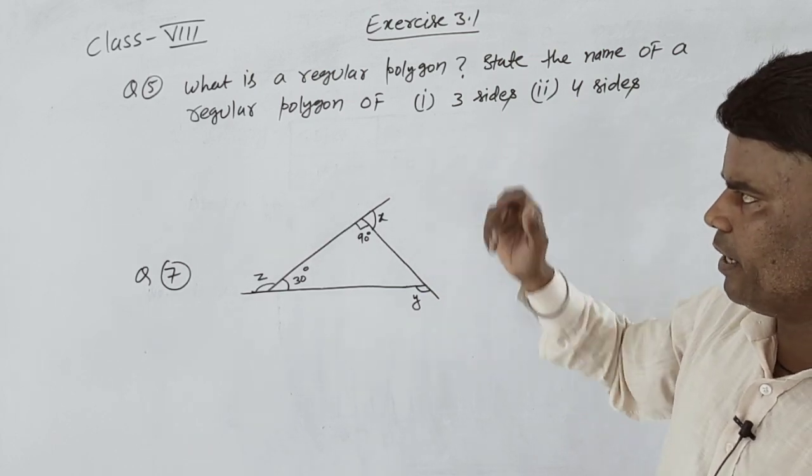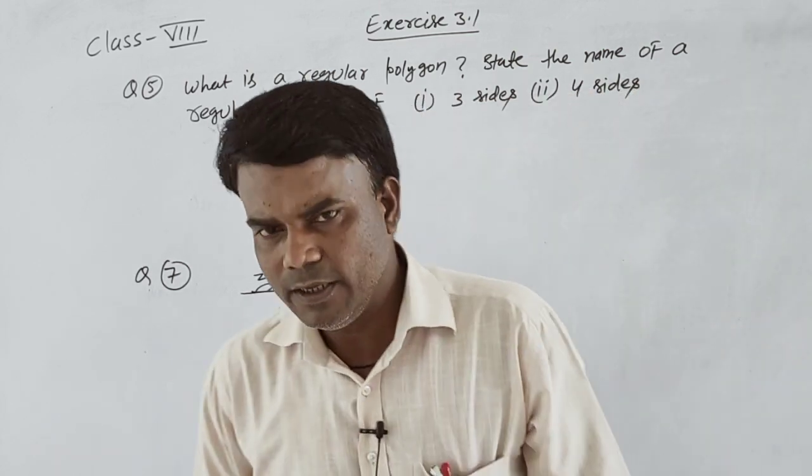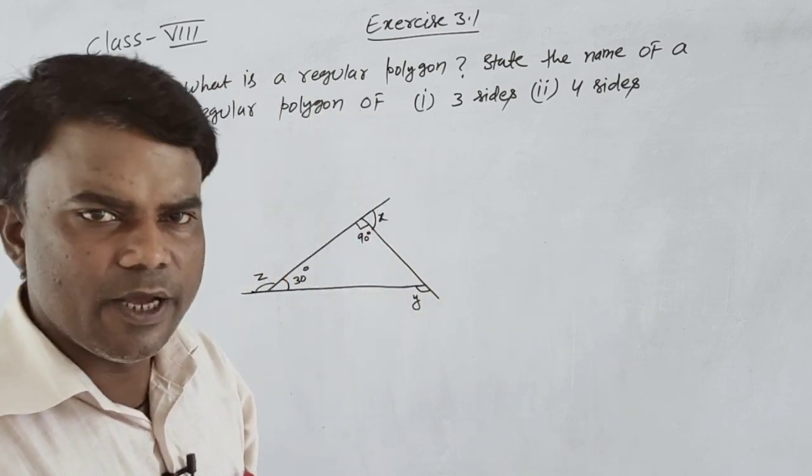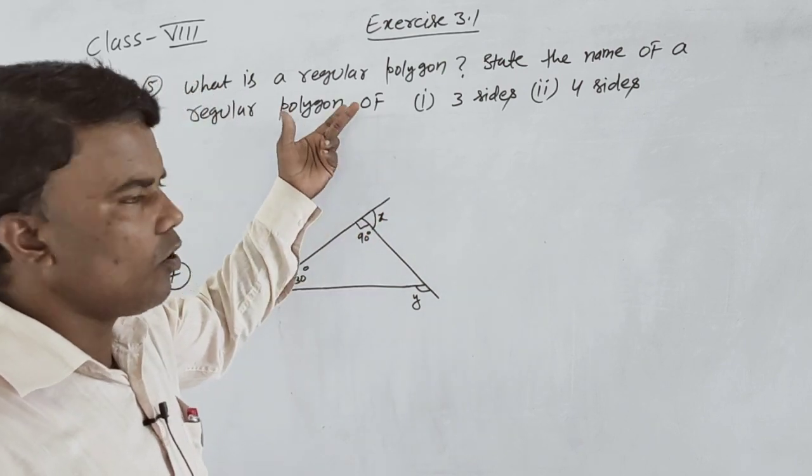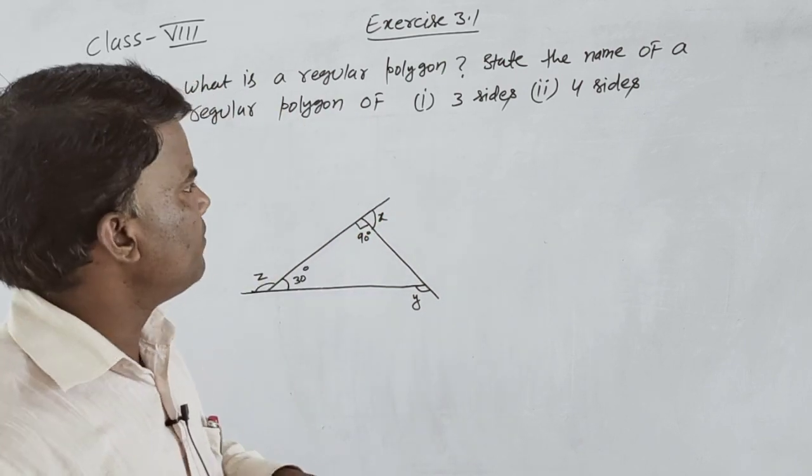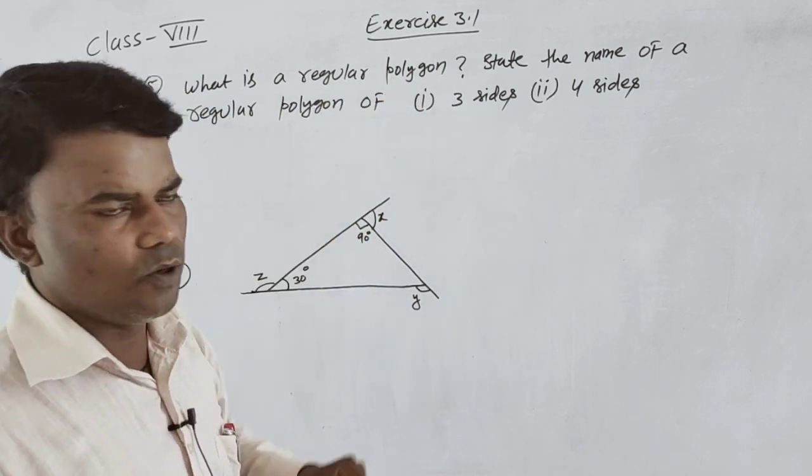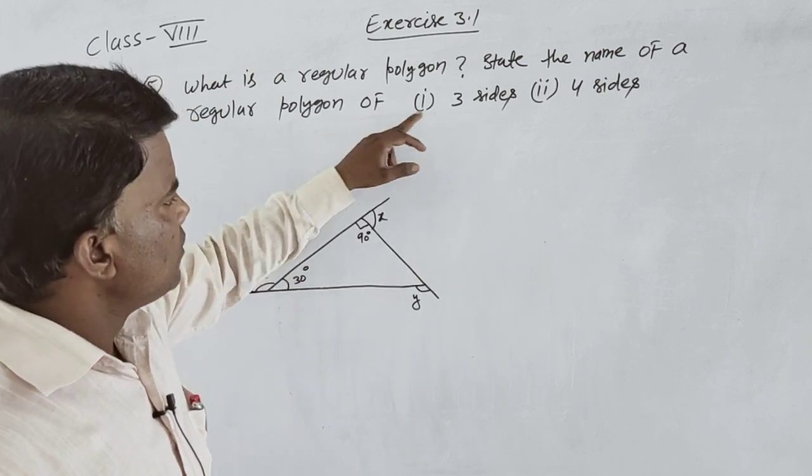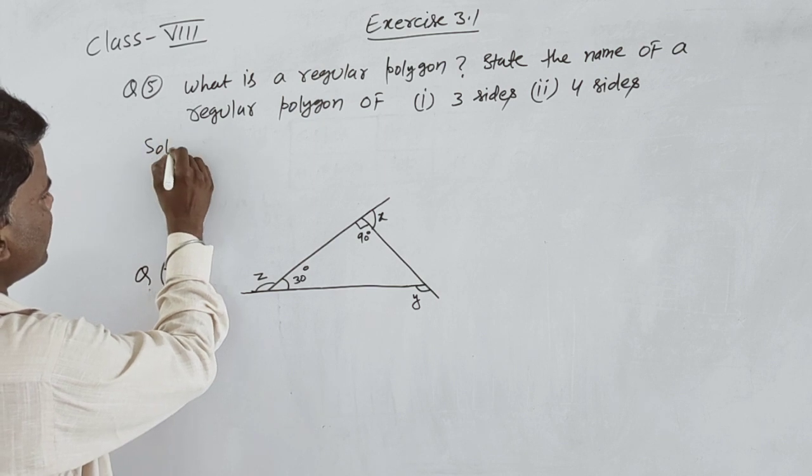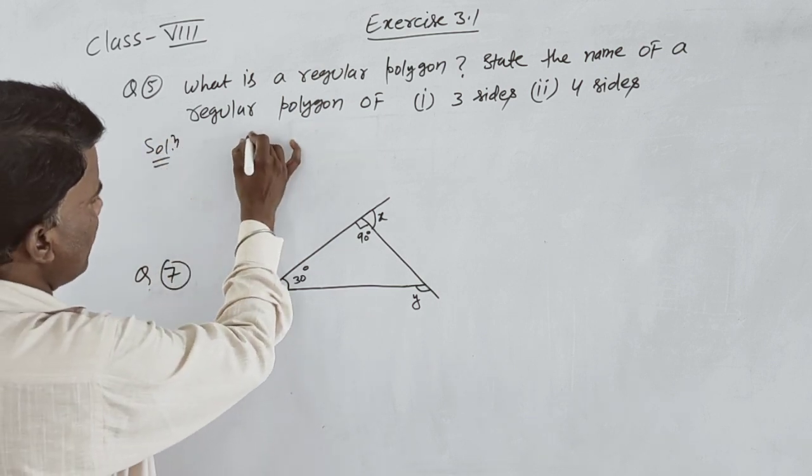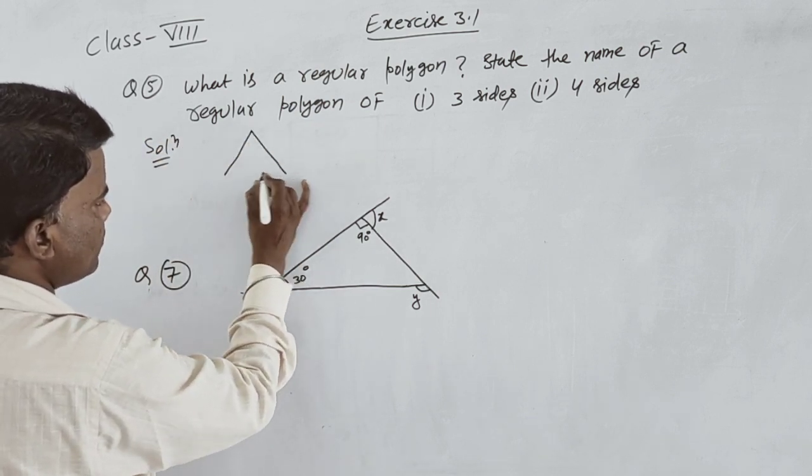We are going to discuss regular polygons, which means that all sides are equal. For three sides, we make an equilateral triangle with three equal sides.